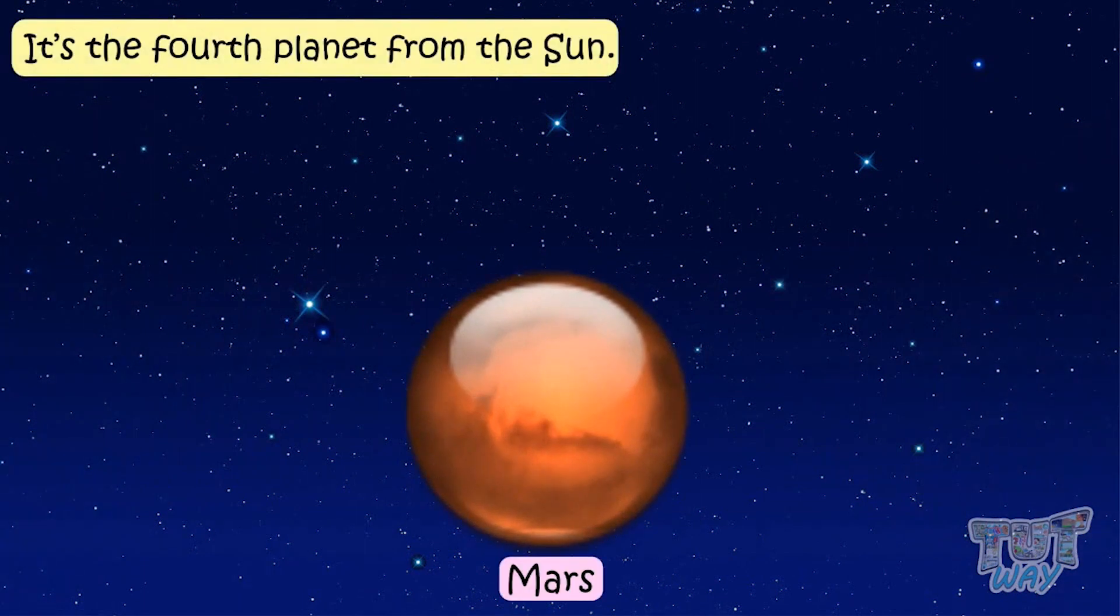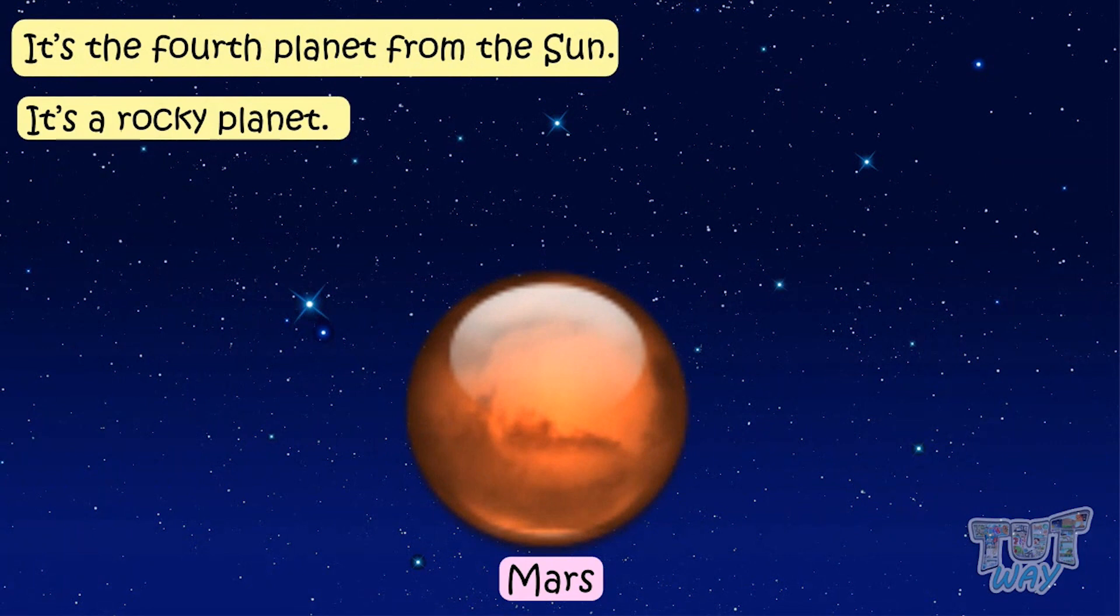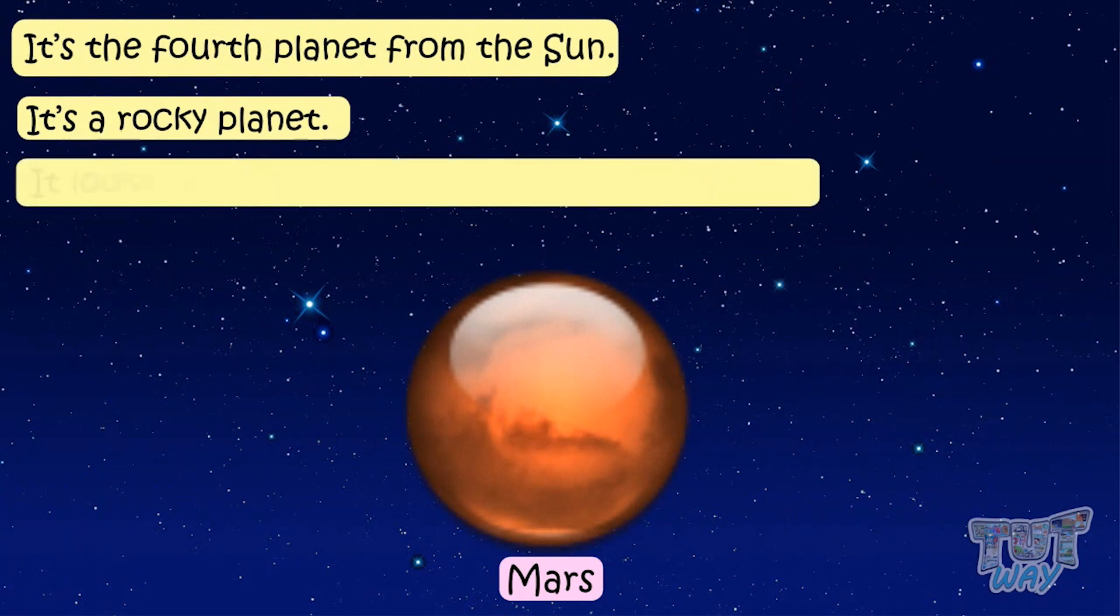Mars is the fourth planet from the sun. It is a rocky planet. It looks red, so it is also called the red planet.